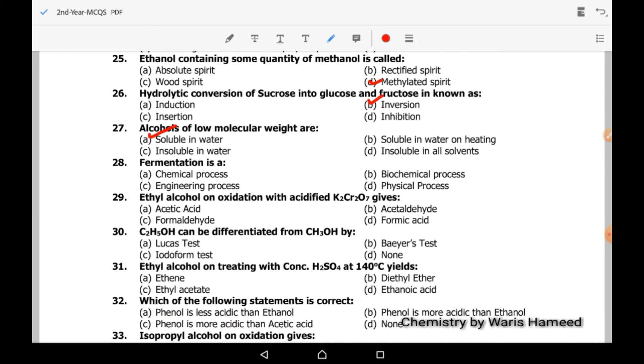Fermentation is a biochemical process. Ethyl alcohol on oxidation with acidified potassium dichromate gives acetaldehyde. When we perform oxidation to an alkane, it converts into alcohol. On further oxidation, alcohol converts into aldehyde or ketone. And on further oxidation of aldehyde and ketone, they convert into carboxylic acid. At the end, there will be the formation of carbon dioxide and water.